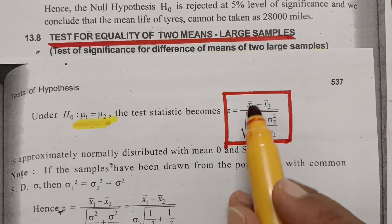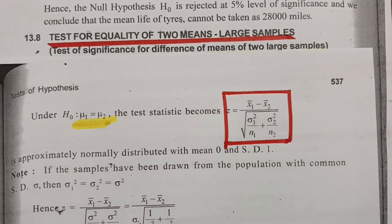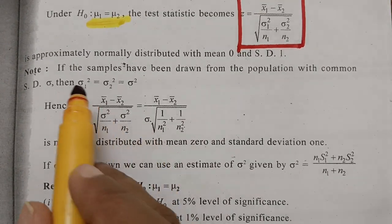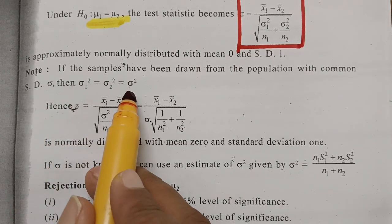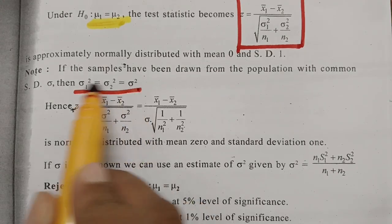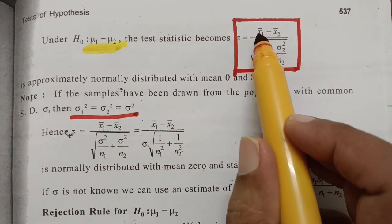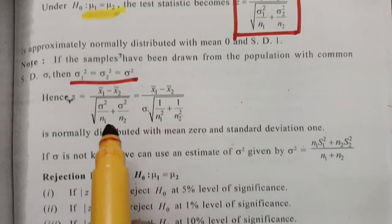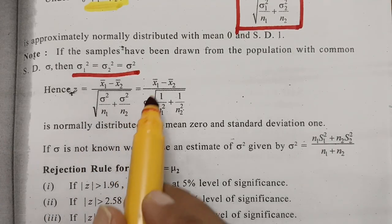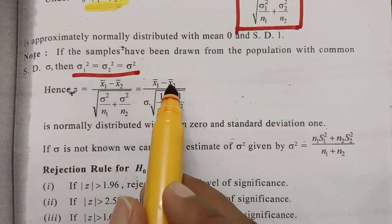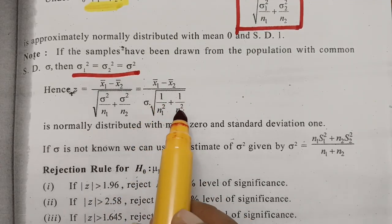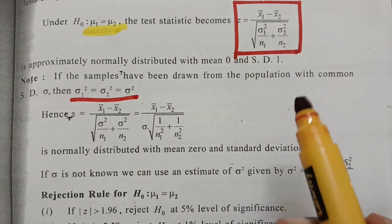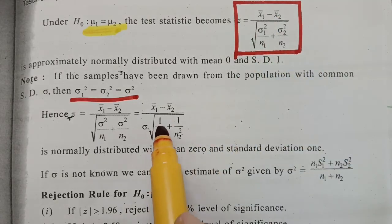This is the standard test statistics formula. If σ1² = σ2² = σ², meaning the standard deviations are the same, then the formula changes to: z = (x̄1 − x̄2) / √(σ²/n1 + σ²/n2), which simplifies to z = (x̄1 − x̄2) / (σ × √(1/n1 + 1/n2)). When σ1 and σ2 are different, use the first formula; if they are the same, use this simplified form.